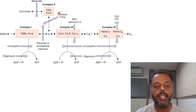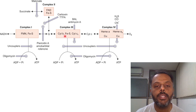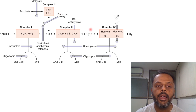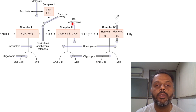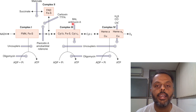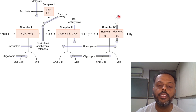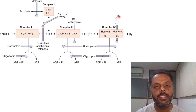Inhibitors of complex 3 — from cytochrome B to cytochrome C — are British Anti-Lewisite (BAL) and antimycin A. Inhibitors of complex 4, that is cytochrome C oxidase, are cyanide, carbon monoxide, and hydrogen sulfide. These are the inhibitors of the ETC itself.